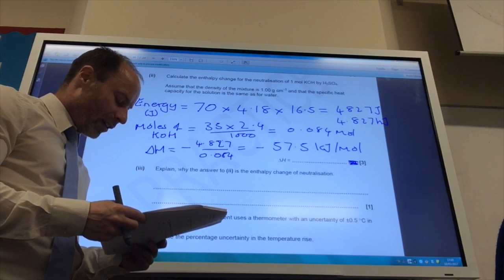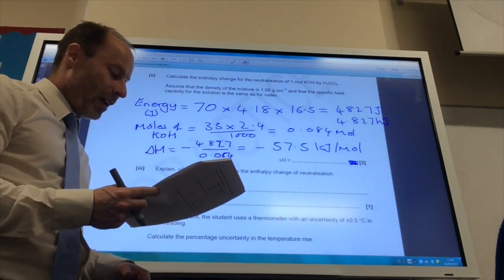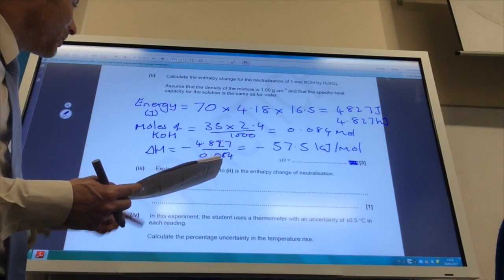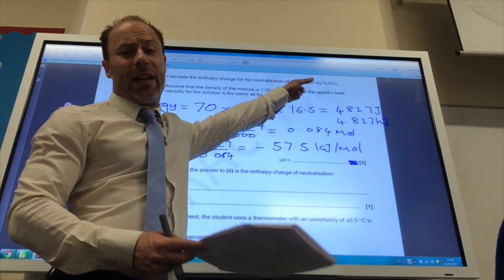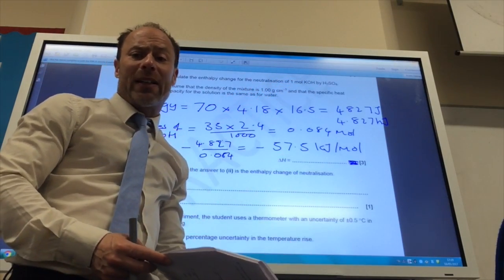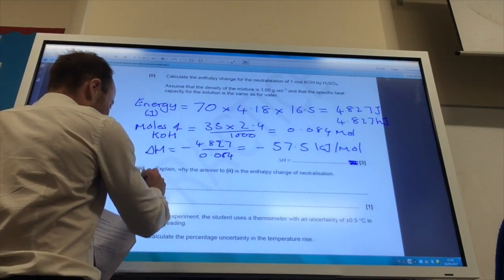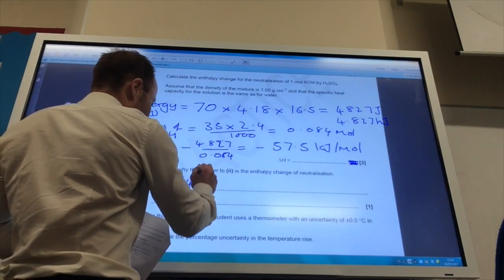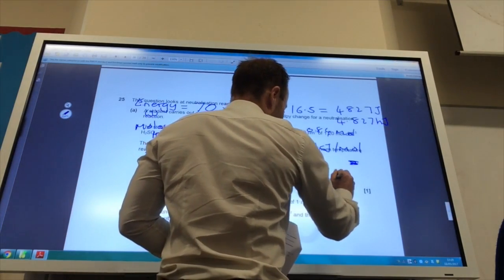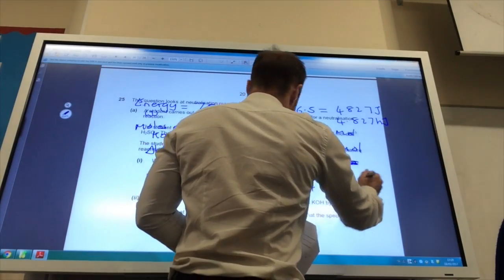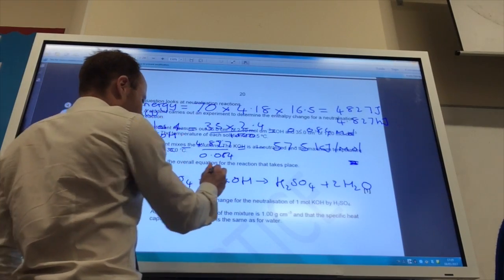Explain why the answer to part two, so this one, is the enthalpy change for neutralization. It's because one mole of water is used. This is per mole of KOH, because I've done it here for one mole of KOH. If we go back to the equation, which we wrote earlier, we said it was H2SO4 plus 2KOH gives me K2SO4 plus 2H2O.